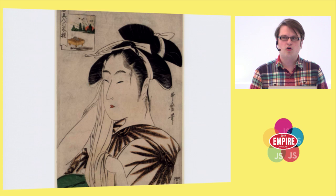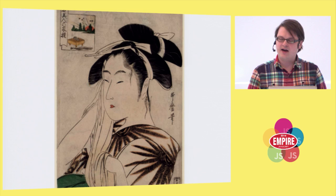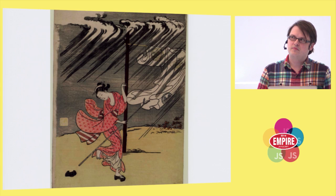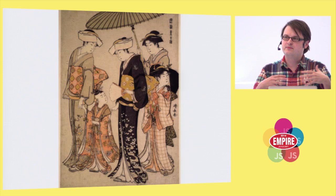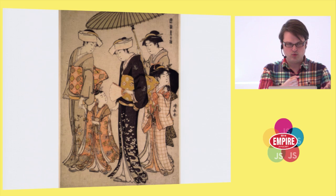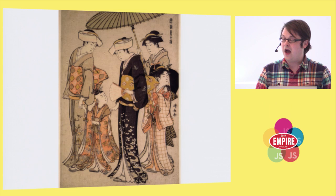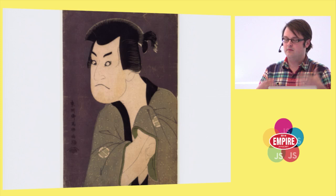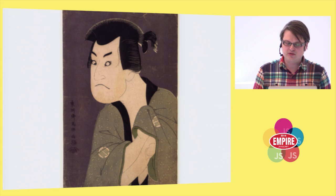Tokyo was a major metropolis. I think in the 1720s it was the largest city in the world — over a million people lived there. You have all sorts of really interesting dynamics relating to popular consumerism. A lot of these prints were created and mass produced. They're carved in a piece of wood, ink is applied, paper is pressed on, and thousands and thousands of these were produced for people to buy and display in their homes.